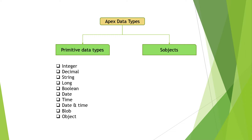A data type defines what type of data it can hold. We can save the data — for example, alphabets, numbers, point values. The data type is defined by the kind of value it stores.